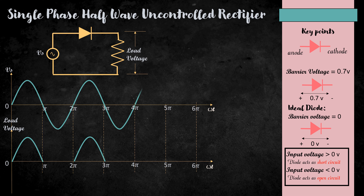Now, let's consider the input from 4π to 5π. Here, the input voltage is greater than 0. Therefore, the diode acts as a short circuit, so the load voltage will be the same as that of the supply voltage. Considering the input from 5π to 6π — here, the input voltage is less than 0. Therefore, the diode acts as an open circuit, so there is no voltage from 5π to 6π.